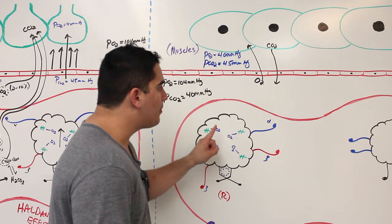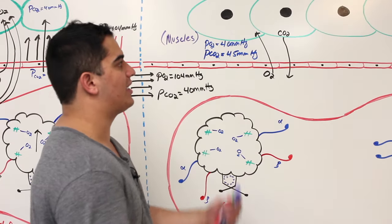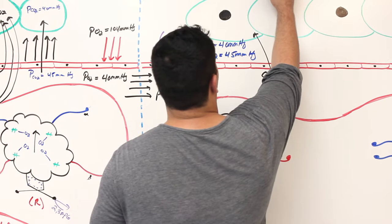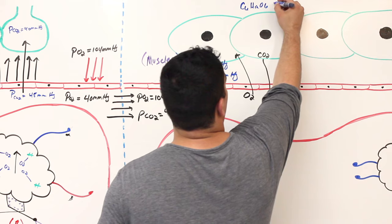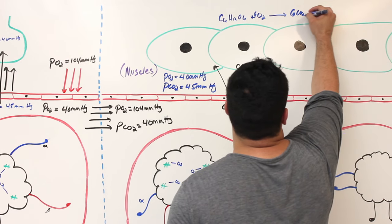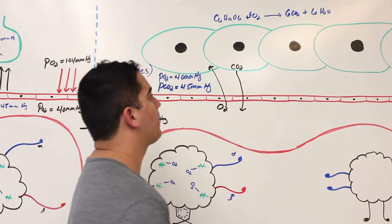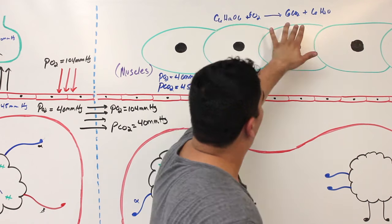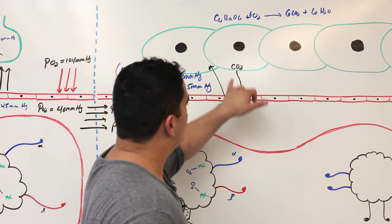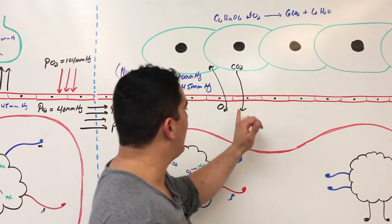Now we need to understand where this CO2 comes from. Within metabolism, glucose — C6H12O6 — plus six oxygens yields six CO2 plus six water. That is our cellular respiration reaction. As CO2 is produced from cellular respiration, metabolizing oxygen and producing CO2 and water, this CO2 moves out of the cells into the blood.